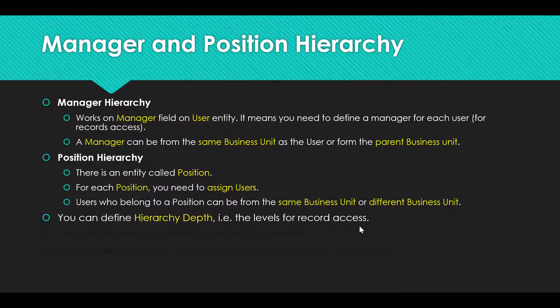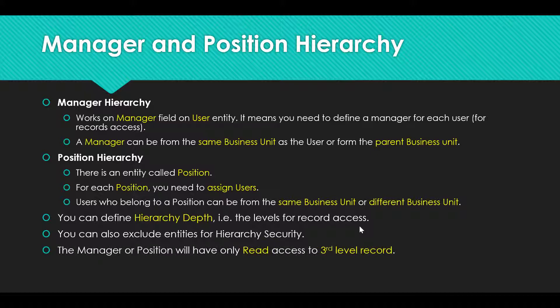In case you have three levels — VP sales, sales manager, and salesperson — the user in VP sales would be able to see the sales manager records in edit mode, but the salesperson record in read-only mode. So the third level is always read-only. You can also exclude entities for hierarchy security, so you do not have to include all entities. The manager or position will have only read access to the third level record.